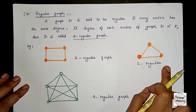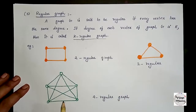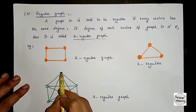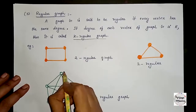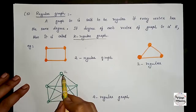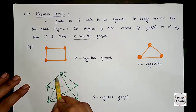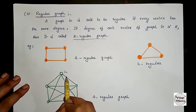In this graph, the vertices are marked with an example and each is labeled with a certain degree. The vertices are 1, 2, 3, 4.